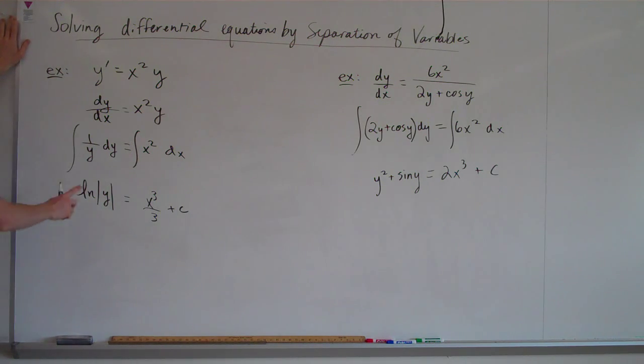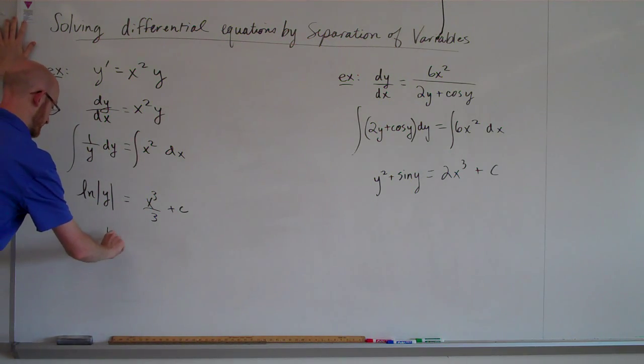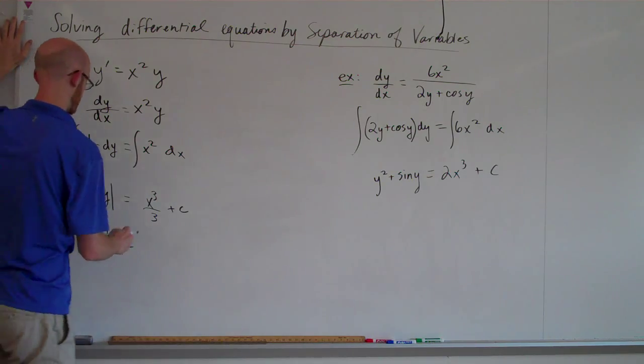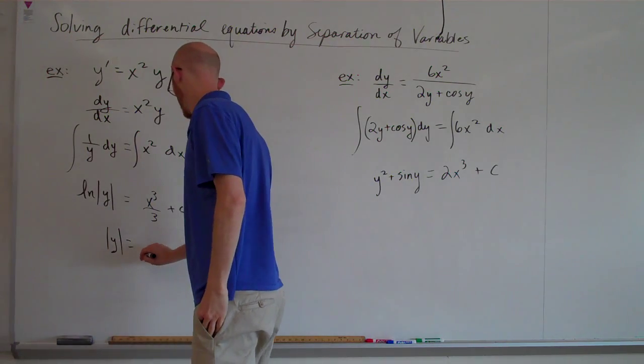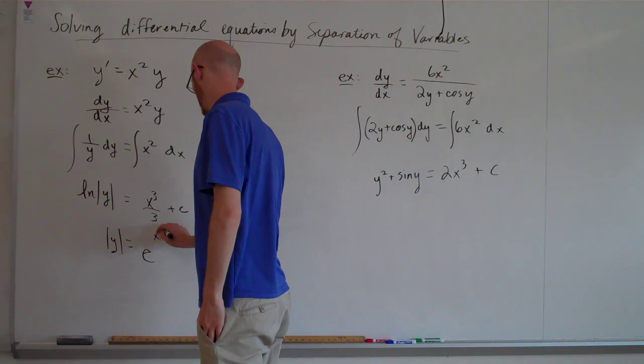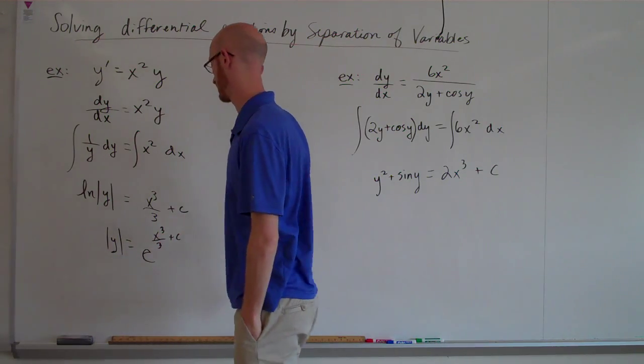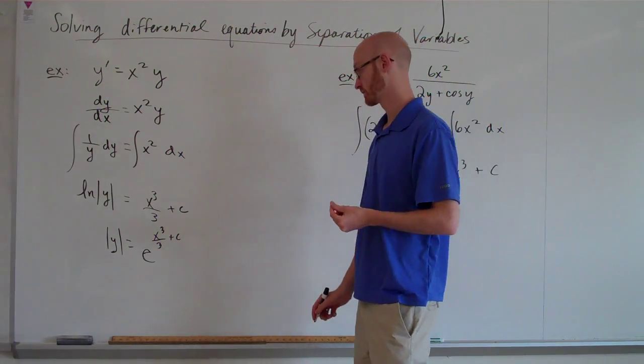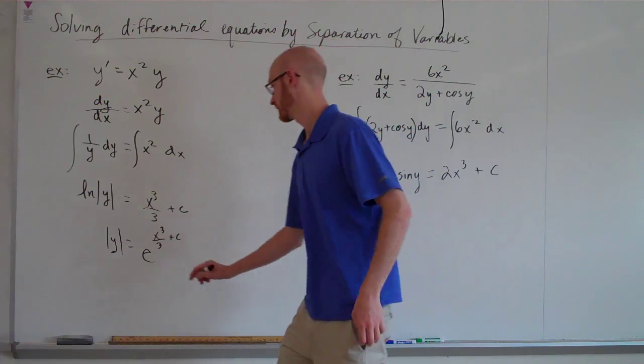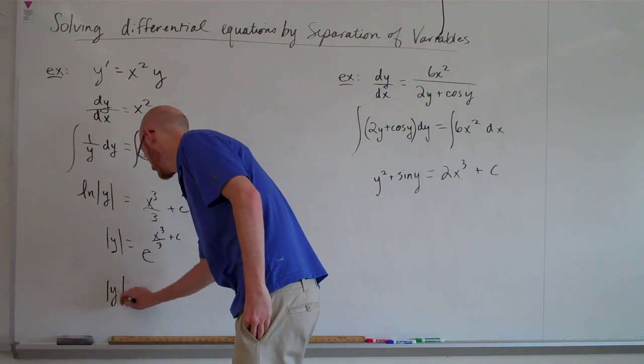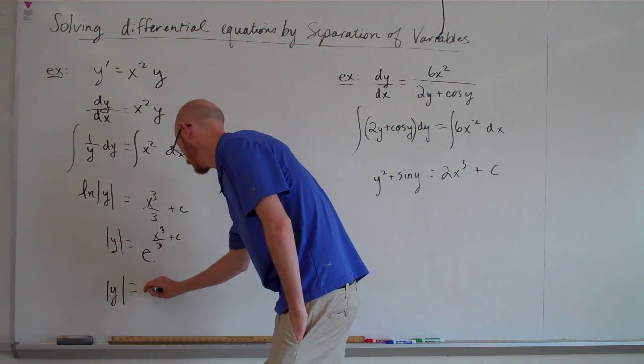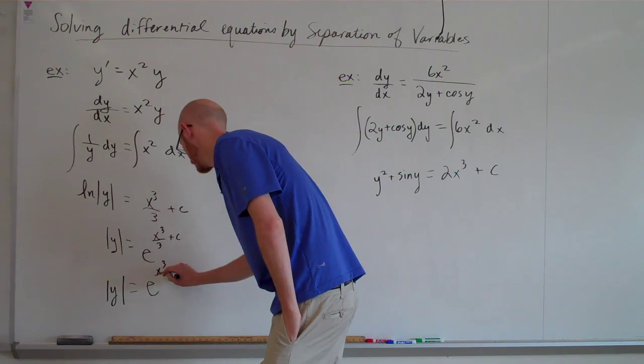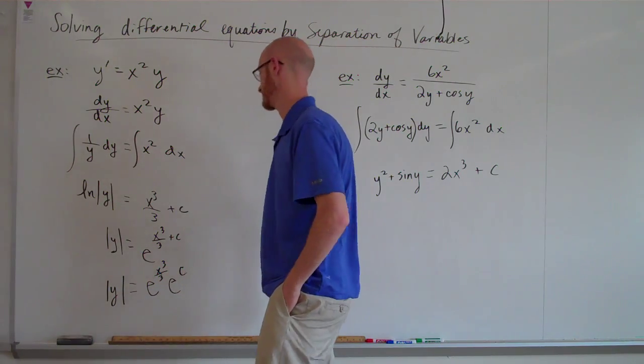Now then, if we wanted to find y explicitly, what we would do is we would exponentiate both sides. So we would get the absolute value of y is equal to e to this whole power. And so then the absolute value of y is equal to e to that stuff times e to the c.